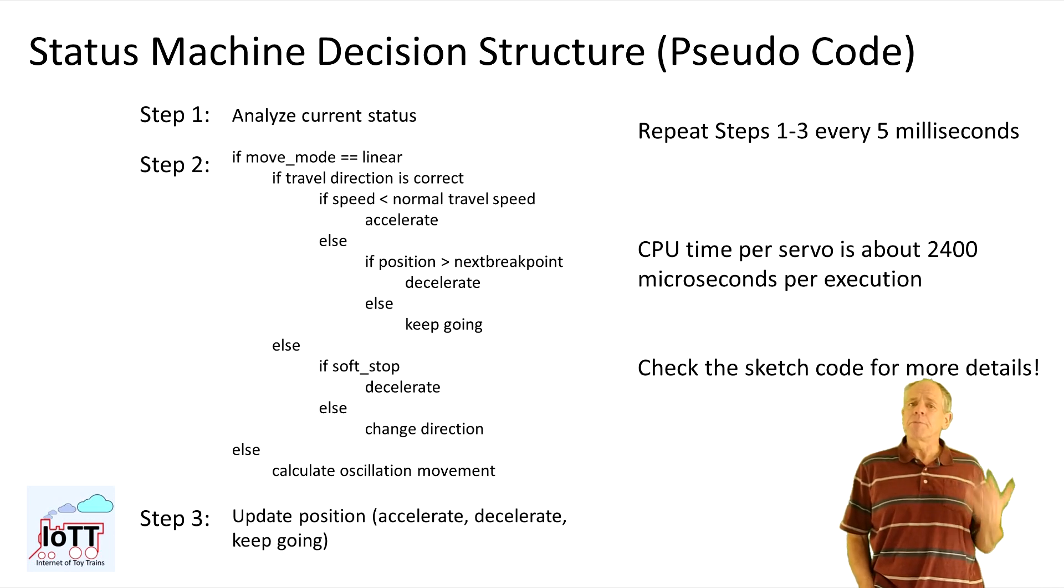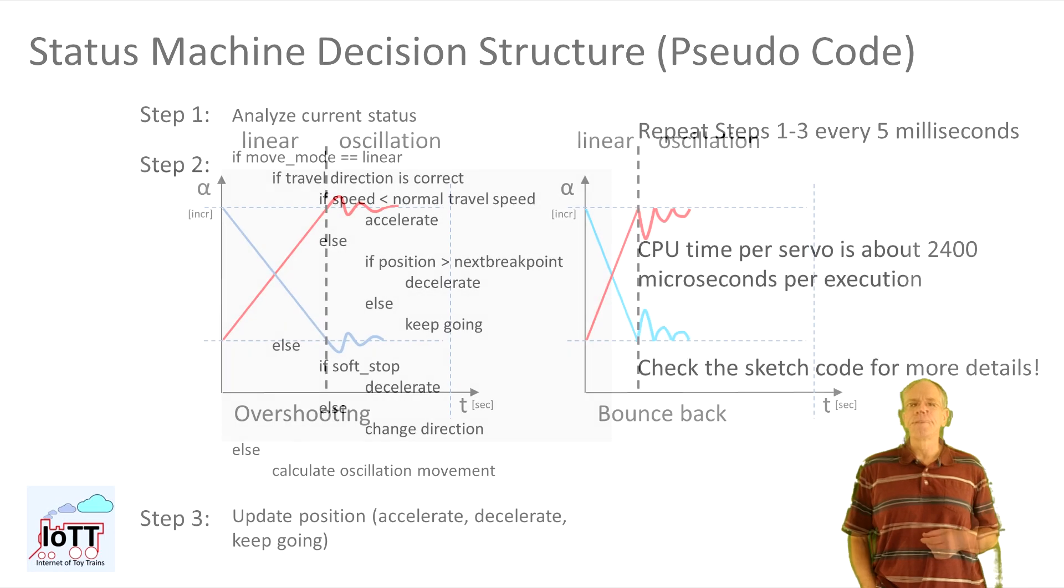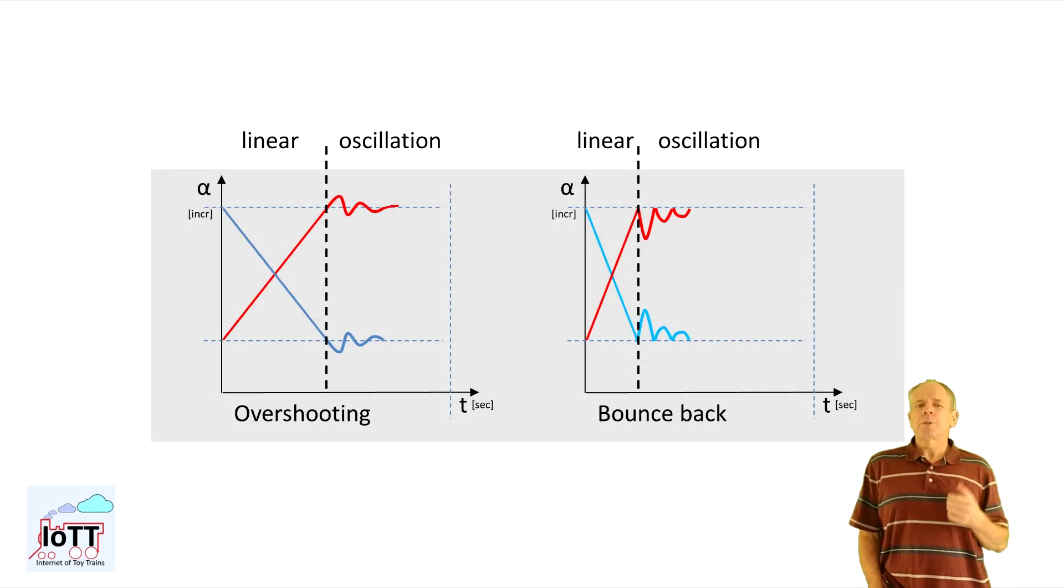Once these elements are clear, it is then a simple decision to either accelerate, decelerate or just keep moving. That's basically all for the linear movement. Once the target position for the linear move is reached, it either is done or goes into oscillation mode.